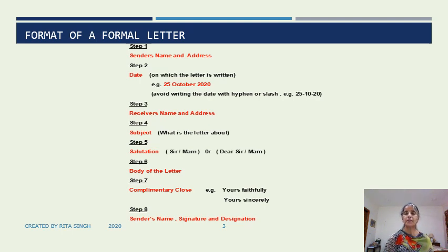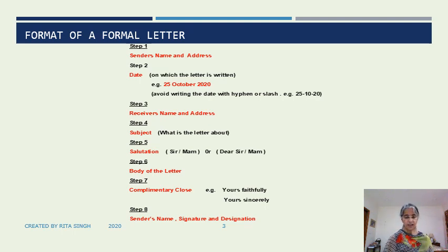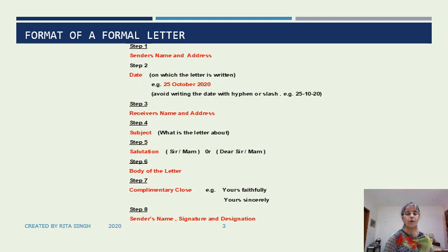Avoid writing the date with a hyphen or a slash. Then again after leaving a line, the receiver's name and address has to be written. The next step is to write the subject — that is, what the letter is about. It should be short and to the point. Next is writing the salutation. We start the salutation of a formal letter by writing 'Sir' or 'Ma'am' or 'Dear Sir', 'Dear Ma'am'.